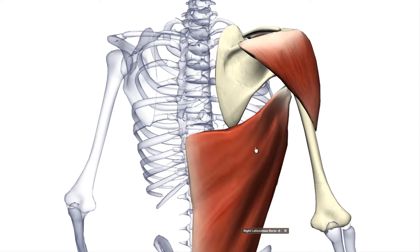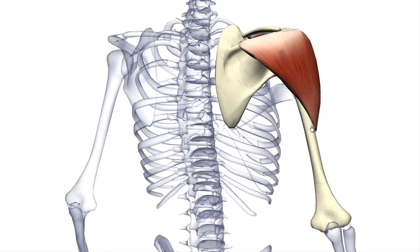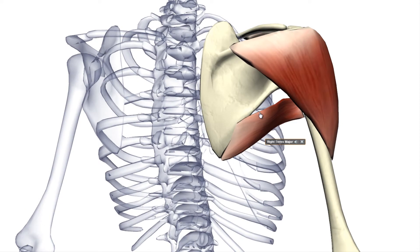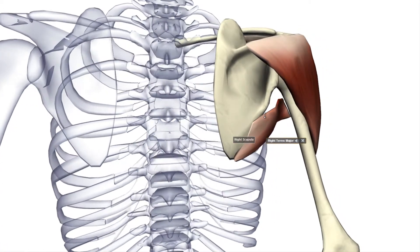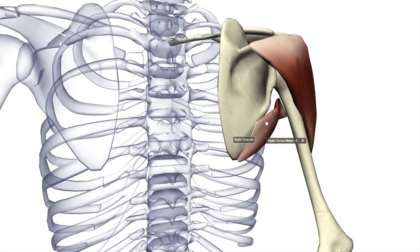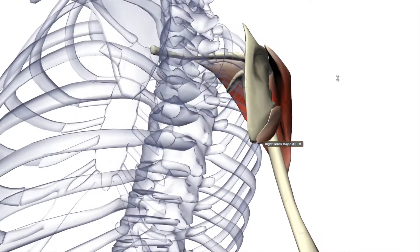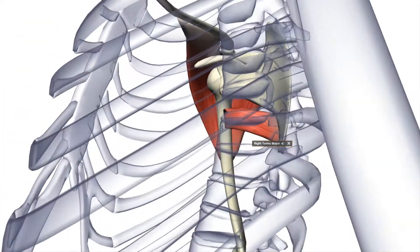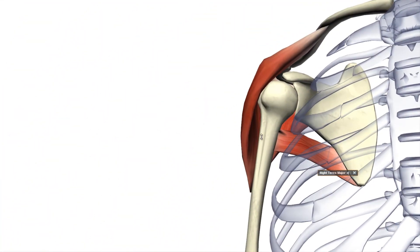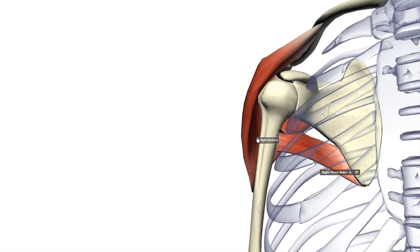Here is the latissimus dorsi muscle. Another shoulder muscle I will talk about is the teres major. The teres major has its origin on the posterior aspect of the inferior angle of the scapula. The insertion is the medial lip of the intertubercular sulcus of the humerus — you can learn more about this sulcus in my lessons about bones.